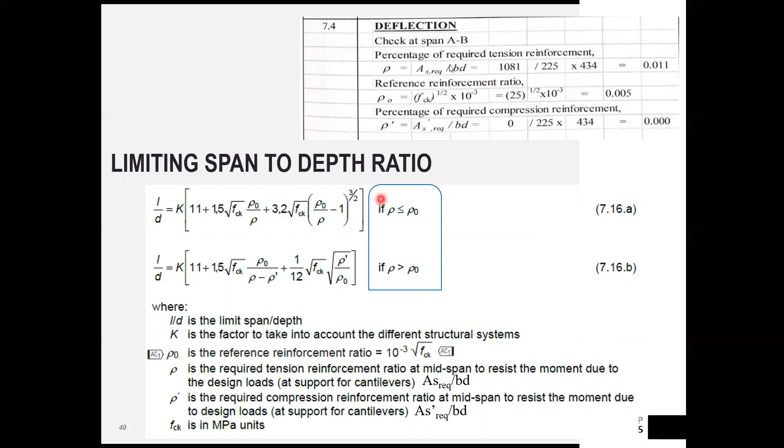The equations in 7.16a and b. We will compare the rho and rho naught. If the rho is less or equal to rho naught, 7.16a or equation number 1 will be used. If rho is greater than rho naught, then 7.16b or equation 2 will be used. In this case, the rho is greater than rho naught. Therefore, equation 2 to be used.